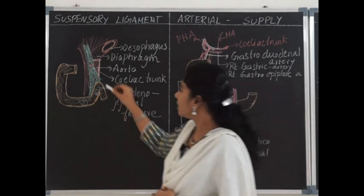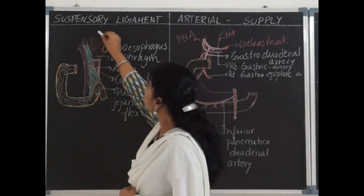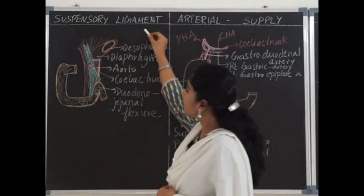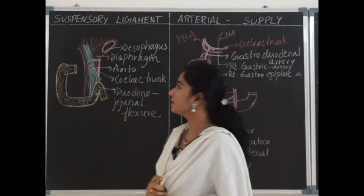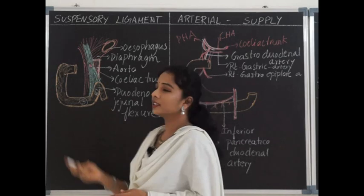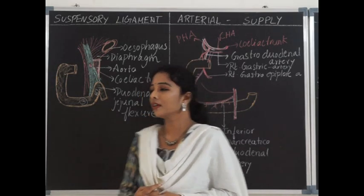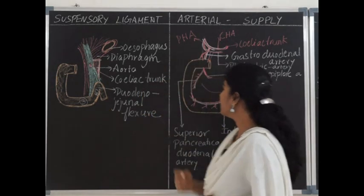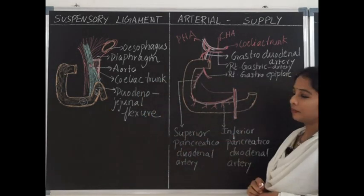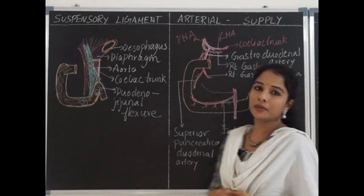Functionally, contraction of the ligament of Treitz reduces the angle at the duodenojejunal flexure, allowing free passage of food from the duodenum into the jejunum. Embryologically, it is an important landmark during rotation of the midgut. We shall now see the blood supply of duodenum.